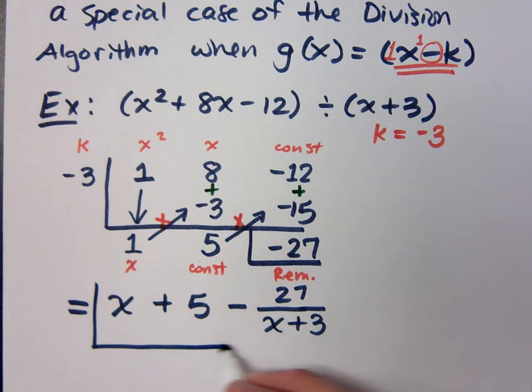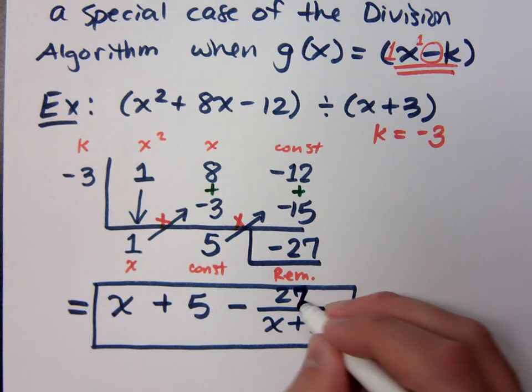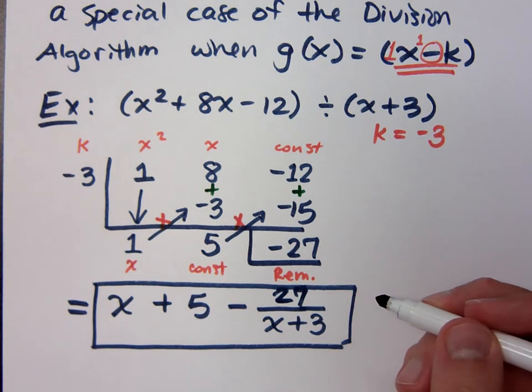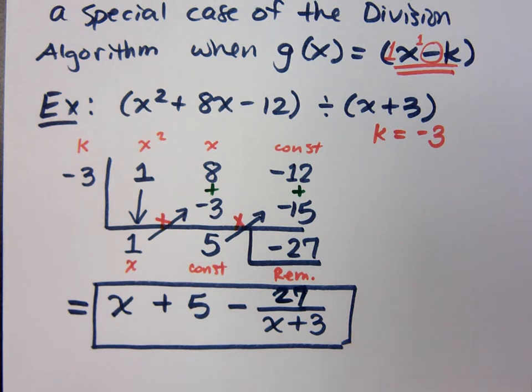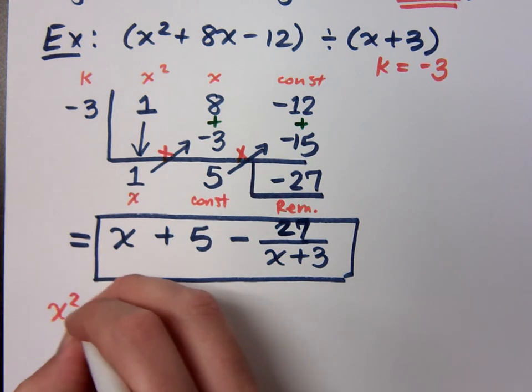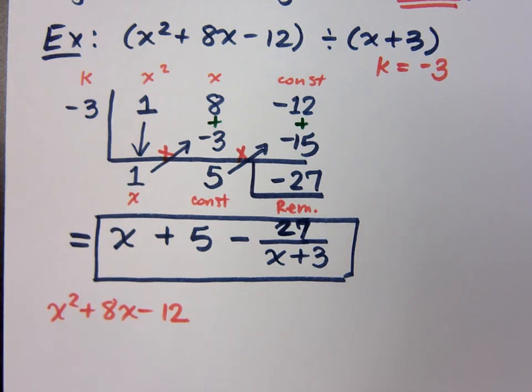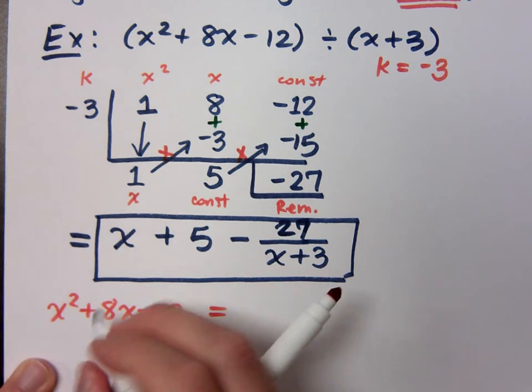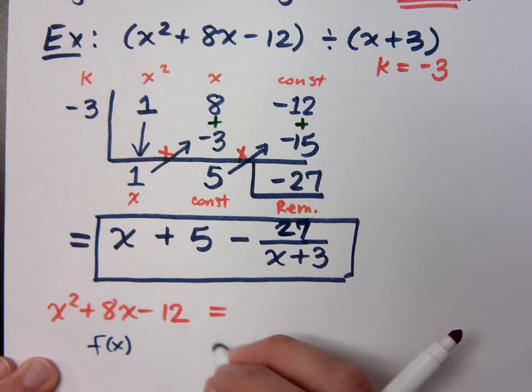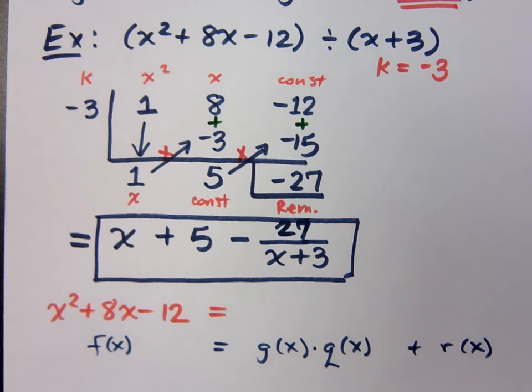If you remember long division and you do long division, you get the same answer. Now, I want to tell you what this means. That means that my polynomial, x squared plus 8x minus 12, if you go back and you look at what we said for our division algorithm...